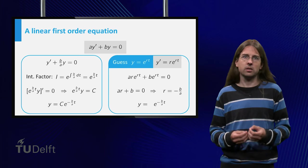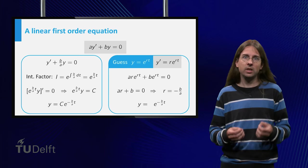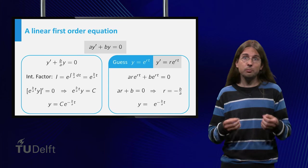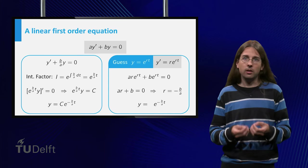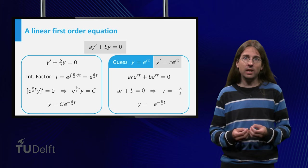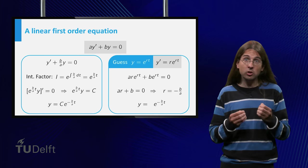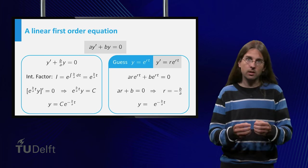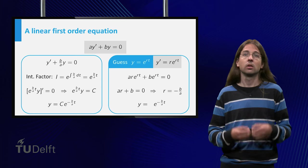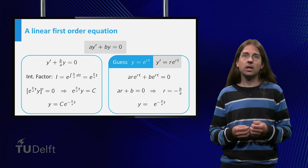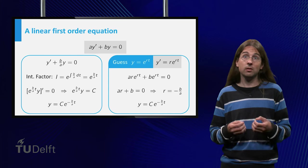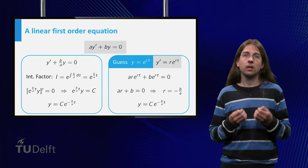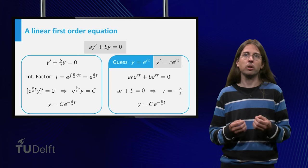So the entire equation a·y prime plus b·y equals zero is multiplied by this constant. Therefore, the equation remains valid and hence every multiple of a solution is another solution. We thus arrive at the conclusion that y equals c times e to the minus b over a t, for any constant c, is a solution to the original equation.